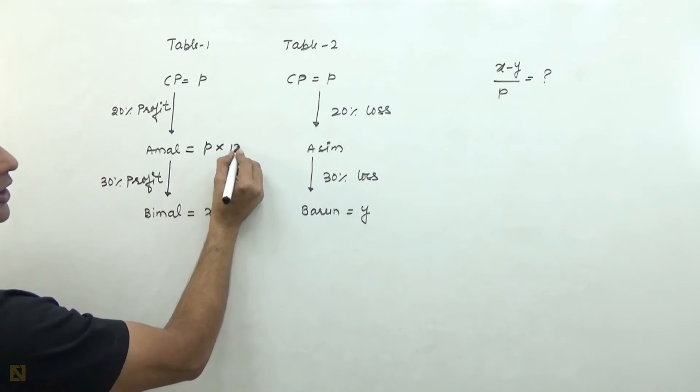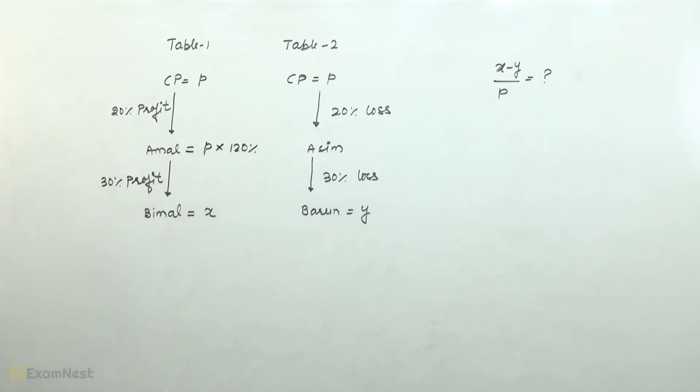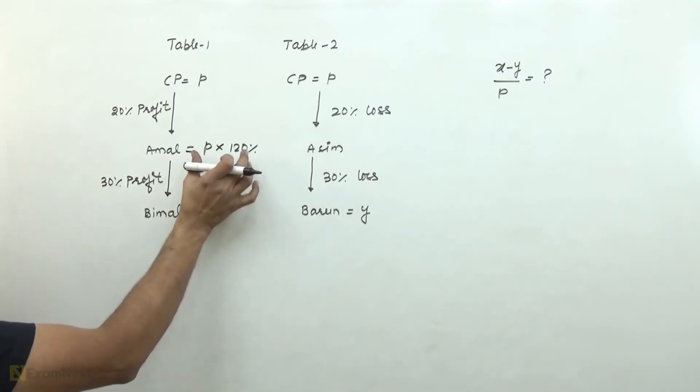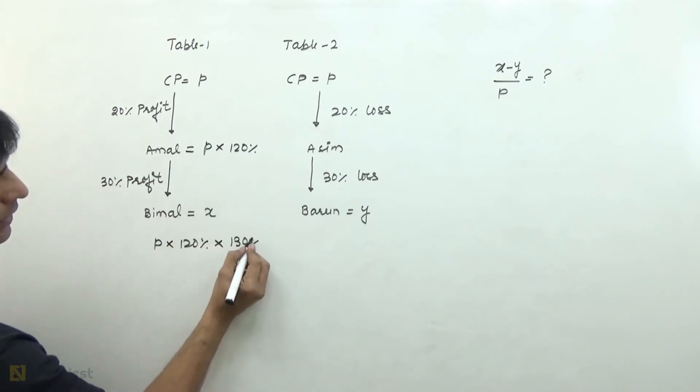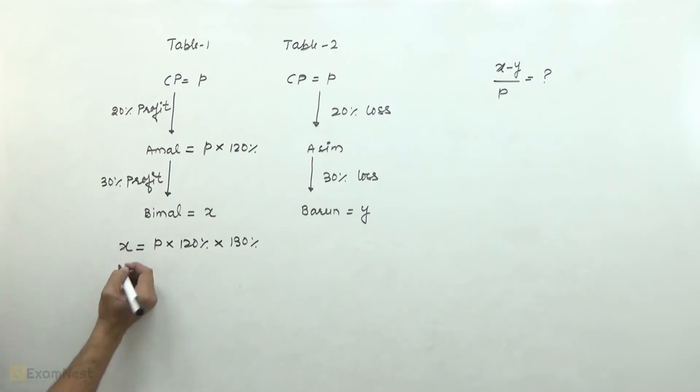P into 120%, that means 20% more. What about Bimal? Bimal buys from Amal who bought at 30% profit for selling. So Bimal pays P into 120%, this is the price Amal paid, into 130% because 30% profit. This equals x.